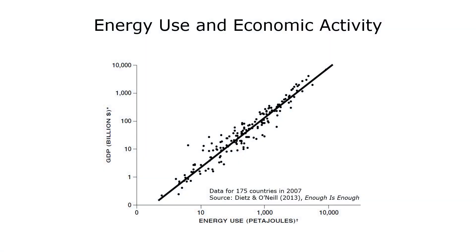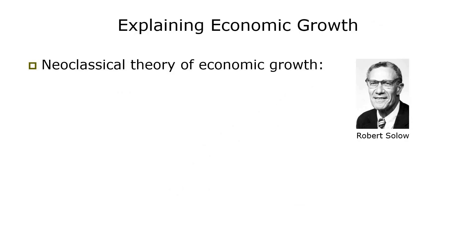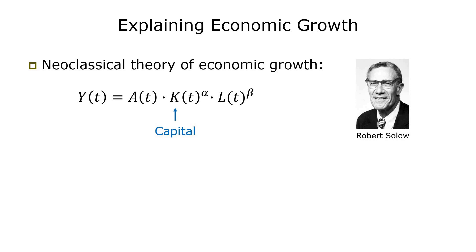If we compare GDP and energy use across countries, we quickly see that there's a very strong correlation between the two. However, correlation does not imply causation, so it's worth digging a little deeper. The neoclassical theory of economic growth, for which Robert Solow won the Nobel Prize, postulates that economic output Y over time is a function of capital K and labor L. However, economic growth cannot be explained if you only consider these two factors.